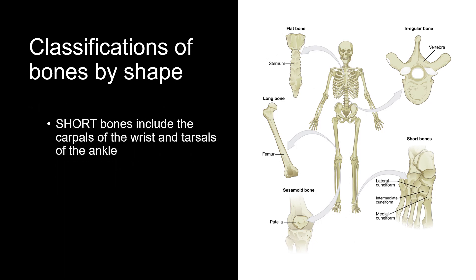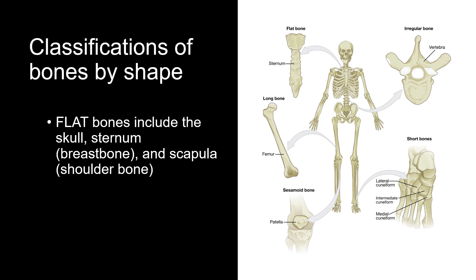The second type of bone is the short bone. Short bones are roughly as wide as they are long and are often cube-shaped. They provide support and stability, and their main function is to facilitate movement in the joints. Examples of short bones include the carpals of the wrists and tarsals of the ankle. The third type of bone is the flat bone. Flat bones are characterized by their thin, flattened shape and they provide protection and support for the body's organs. Examples of flat bones include the skull, sternum or breastbone, and the scapula or shoulder blade.